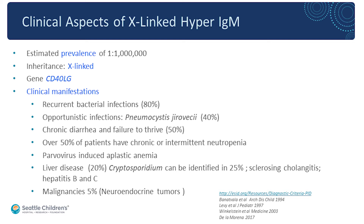In terms of clinical aspects, the estimated prevalence is thought to be about one in a million — but personally I think it's much more frequent than anticipated. A big lesson from newborn screening for SCID is that we used to think one in 100,000 babies had SCID, but now we know it may be one in 40,000 to 60,000. The published prevalence of X-linked hyper-IgM is one in a million, but I think it's much more common.